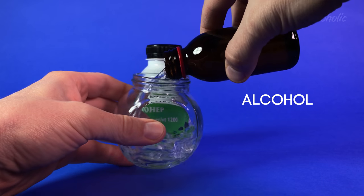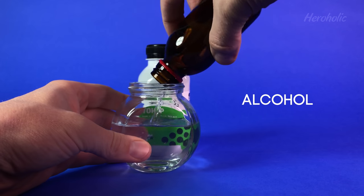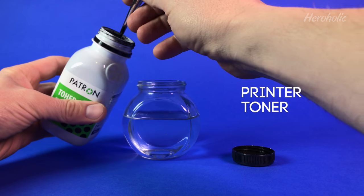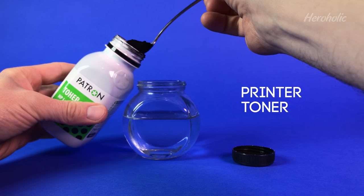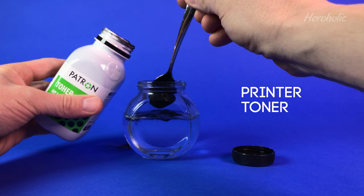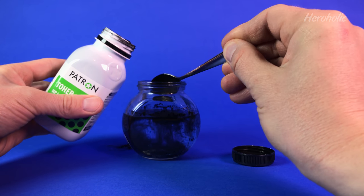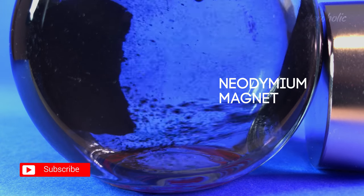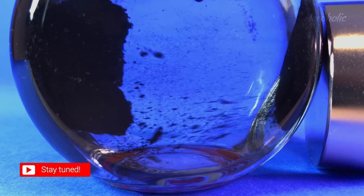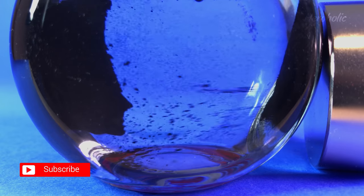You will need an alcohol, some toner from a laser printer and a jar. Put some toner into a jar with alcohol. Then put a magnet close to it. This happens because the toner has some metallic particles in it.